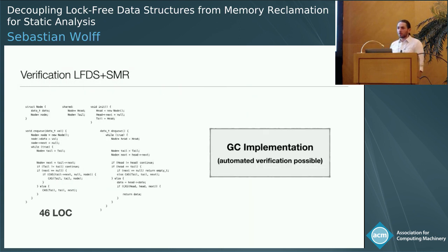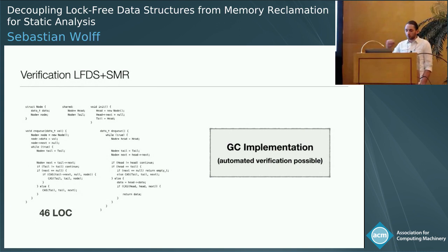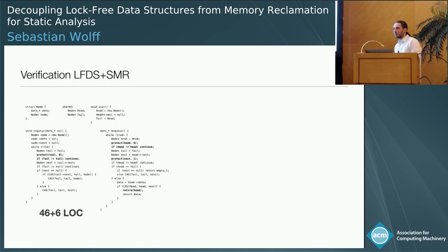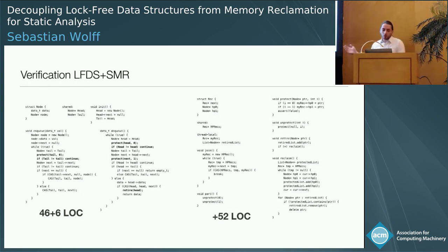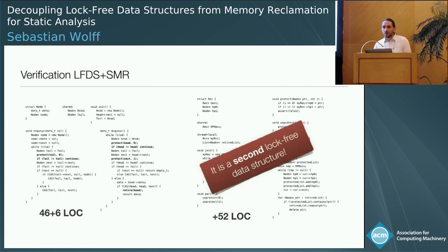I want to give you an intuition why this is the case. That is the full code of Michael-Scott's queue — I don't want you to read it, I just want to look at the sizes. That is the GC implementation assuming a garbage collector, which tools can handle. If we add the retire and protect code we saw before, we add six lines of code — not too bad. However, we also have to add the protect and retire implementations, which give us another 52 lines. And as you might know, if you double the size of the input to your verification tool, it will probably fail. Moreover, those extra lines are not simple code — they are actually another lock-free data structure. So we went from verifying one lock-free data structure to verifying two intertwined lock-free data structures.